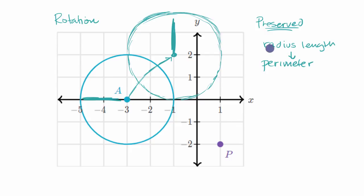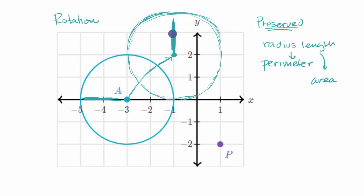And of course, if the radius is preserved, then the area is also going to be preserved. The area is just pi times the radius squared. So if they have the same radius, they're going to have all of these in common — and that feels intuitively right.